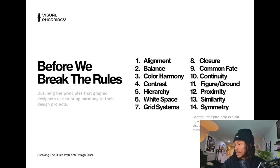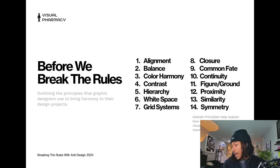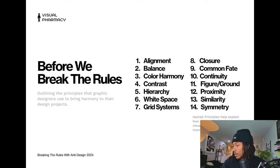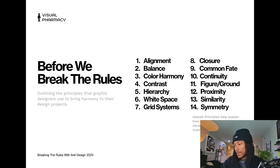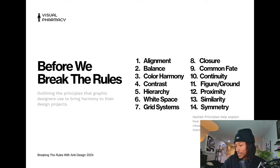Closure is how our eye fills in the gaps of incomplete objects — like the Apple logo with the chunk missing, but you still perceive it as an apple. Common fate states that multiple objects traveling in the same direction are perceived as a group. Continuity is when our eye perceives elements as a continuous flow rather than individual elements.